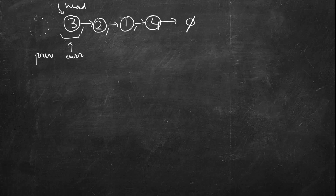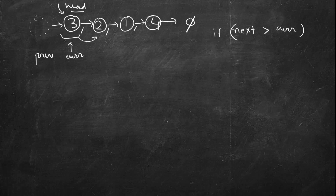The first node is already sorted. We initialize current to the second node and previous to null. You can create a dummy node and make its next point to head so that previous will always be valid, and this will denote that we search after previous. If next of current is more than current, we do nothing — it's already in the correct position, so just advance current.